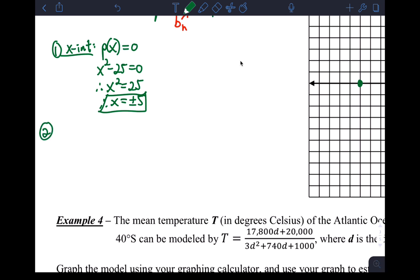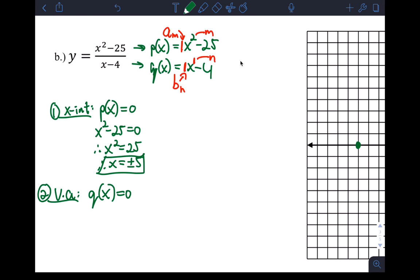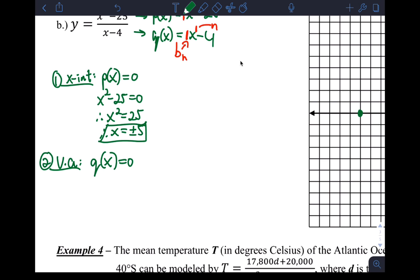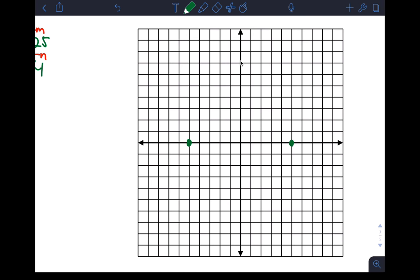Let's do step number two, which is to find the vertical asymptote. You take q(x) and put it equal to zero. So for us, q(x) is the denominator of the rational function. This is x minus 4 equals 0, so x is 4. So I have a vertical asymptote at x equals 4. Go ahead and graph that vertical asymptote. There it is.